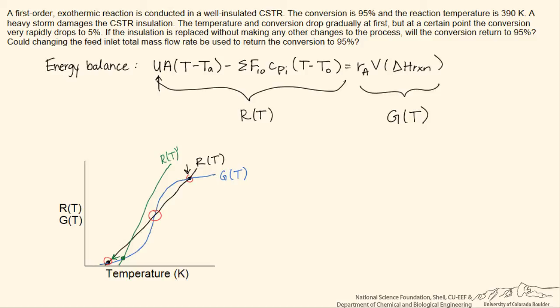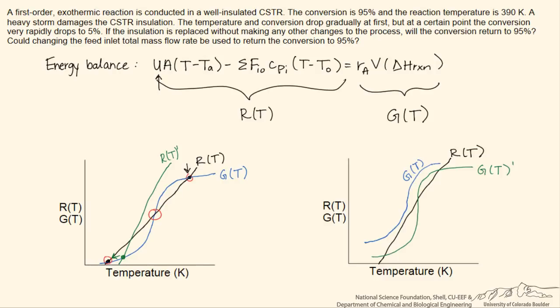The problem asks if changing the inlet total mass flow rate could be used to return to 95% conversion after we had replaced the insulation. And the answer is yes, that it can accomplish this. So let's take a look at the case where R is with the insulation on, and we're operating at the lower steady state on this G curve that is drawn a little bit differently, but let's assume that that's the same rate of heat generation as in our initial reaction case.